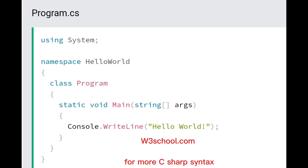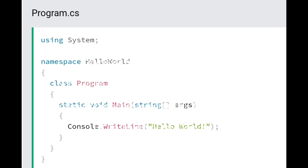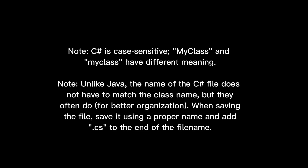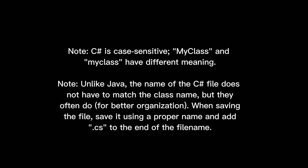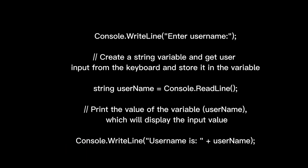For more details, visit w3schools.com where you can find simple and easy ways to learn C#. Some important points: C# is a case-sensitive language, meaning lowercase and uppercase are treated differently. Unlike Java, the C# filename does not have to match the class name, but for better organization we often do that. C# files must be saved with the '.cs' extension.